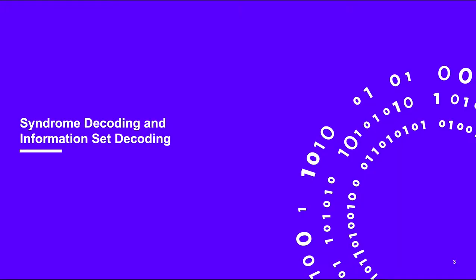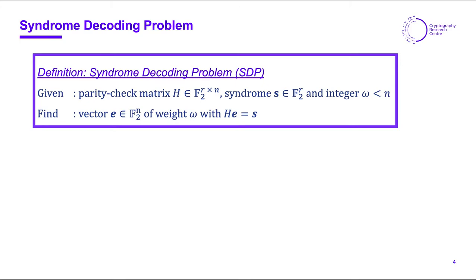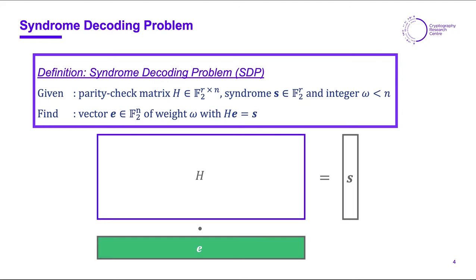First let us cover some basics on the syndrome decoding problem and the information set decoding algorithms which actually solve it. The syndrome decoding problem lies at the heart of code-based cryptography and is defined as follows: given a matrix H, a syndrome vector S (everything is binary), and an integer omega as a weight parameter, the goal is to find a vector E of length N and weight omega such that H times E equals S. Weight here means the number of one-entries in E, since we are in binary.